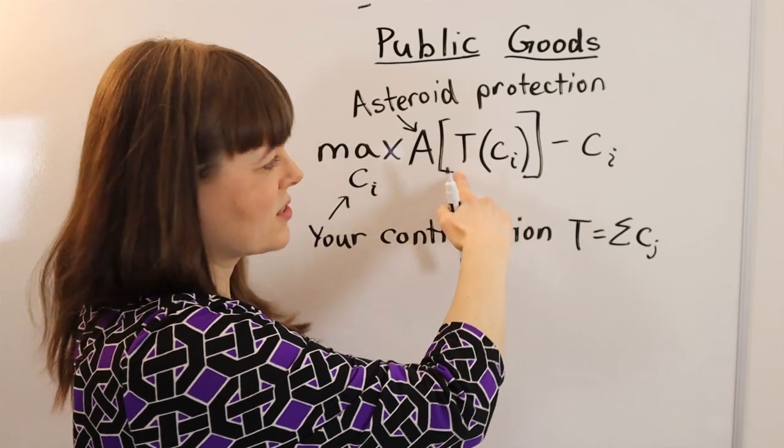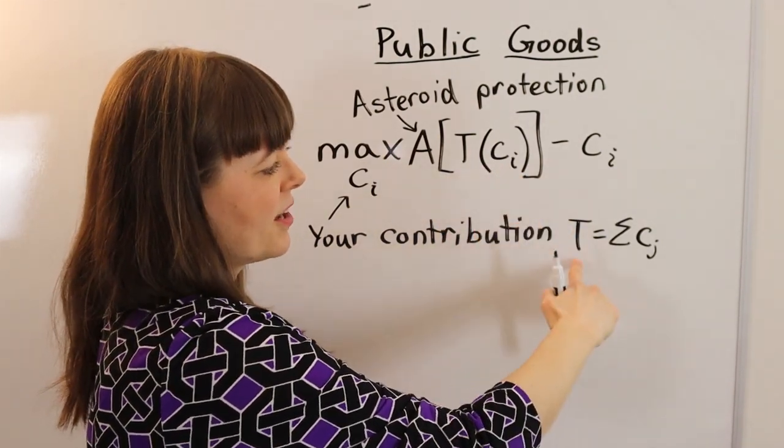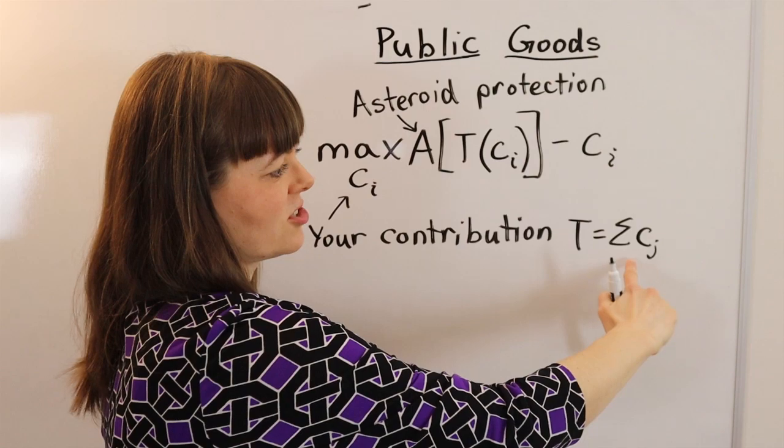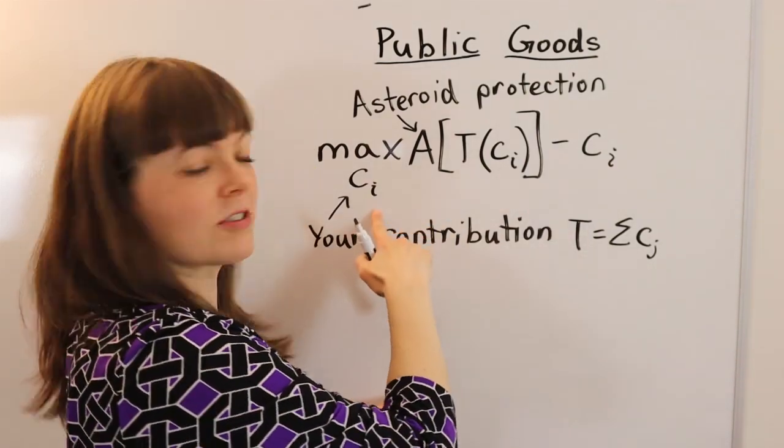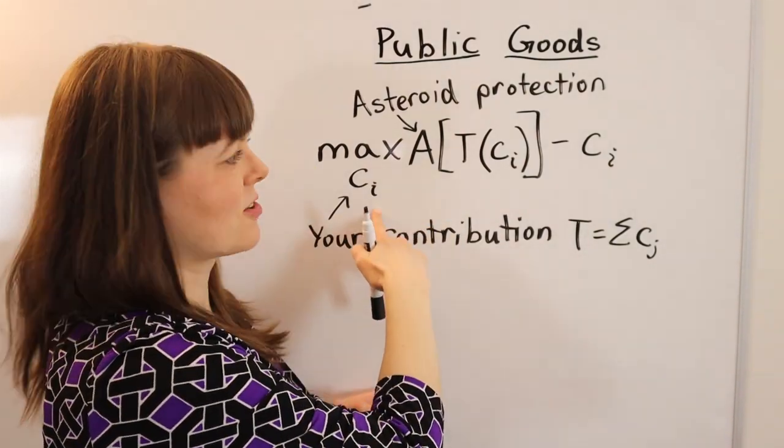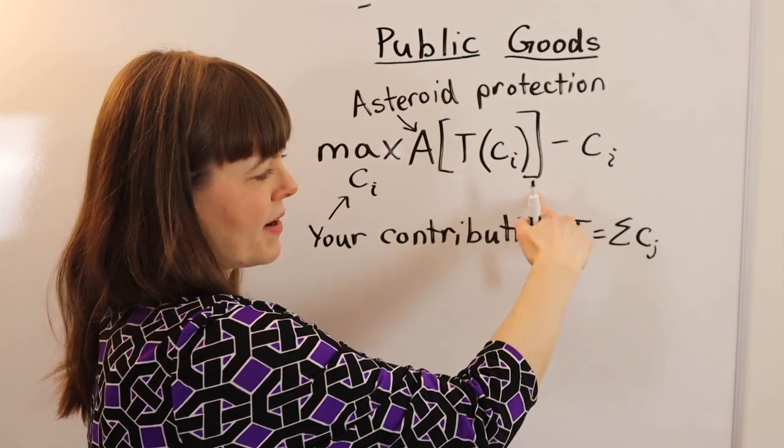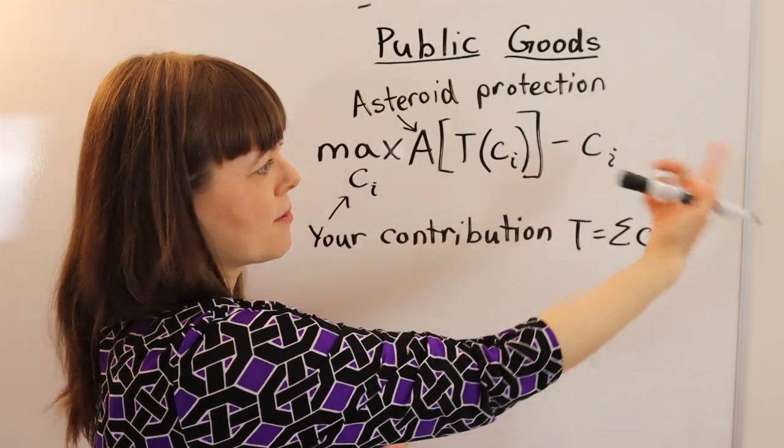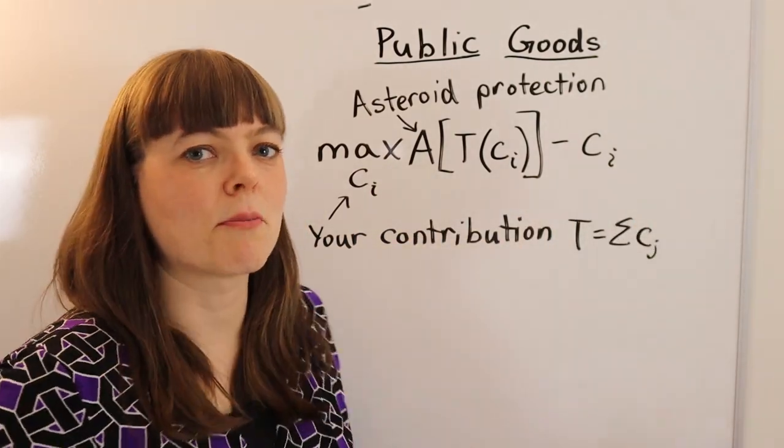Which is a function of your personal contribution. The total contributions is just adding up everybody's personal decision about how much to contribute. That's the benefit. The cost is simply the money you contribute. Very simple model.